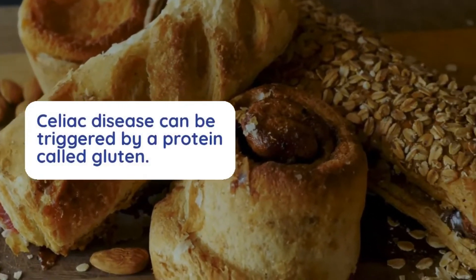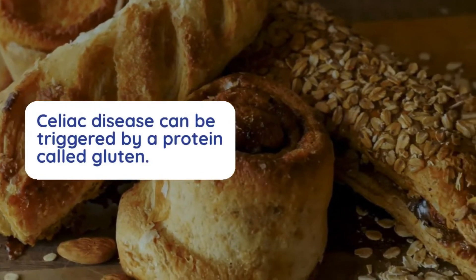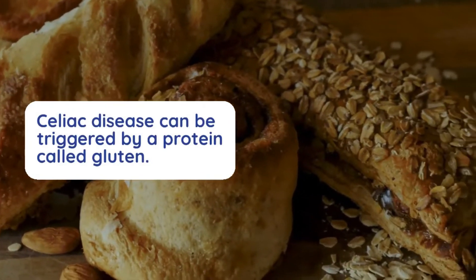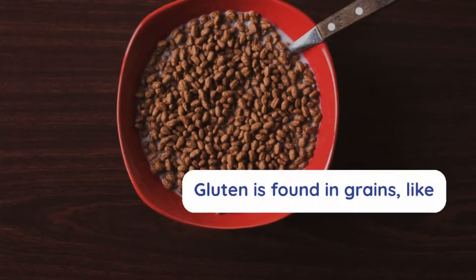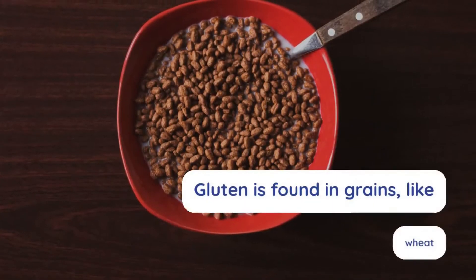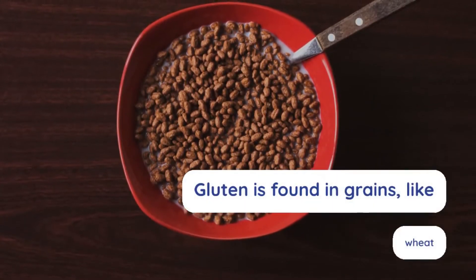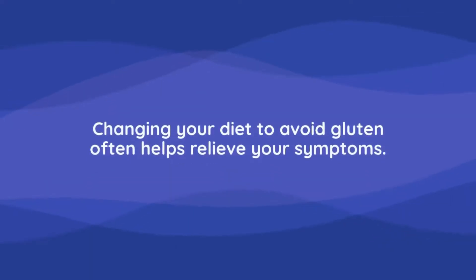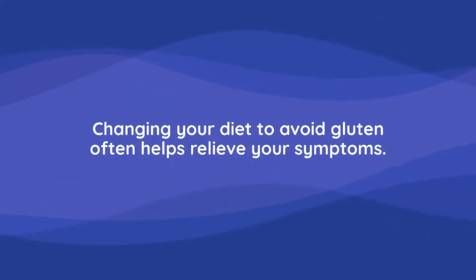Celiac disease can be triggered by a protein called gluten. Gluten is found in grains like wheat, barley, and rye. Changing your diet to avoid gluten often helps relieve your symptoms.